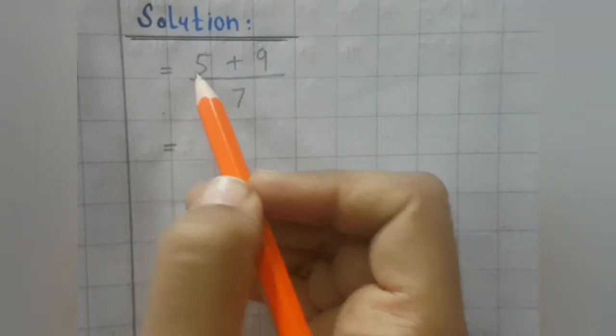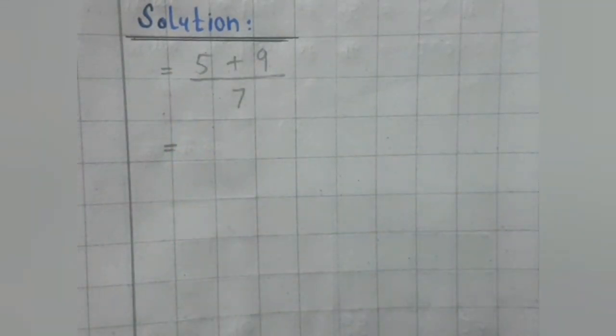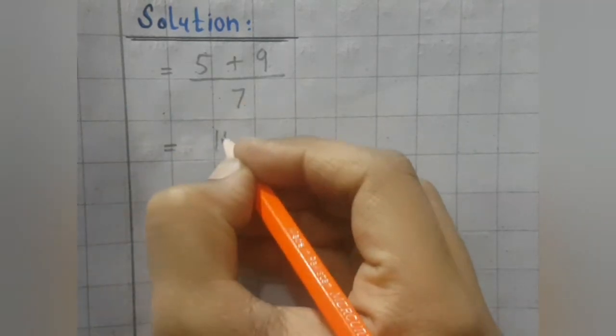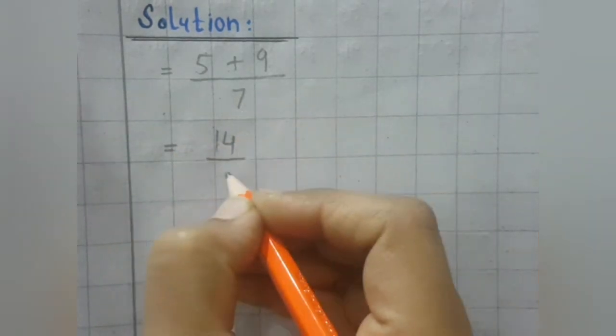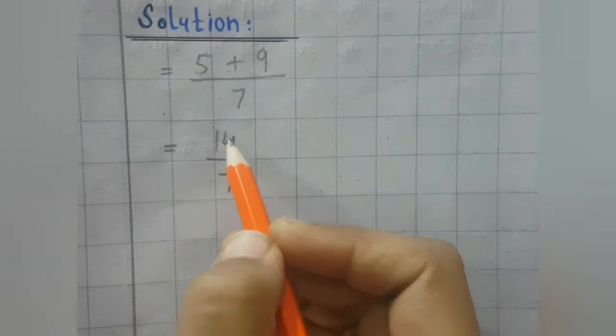Now add the numerators that is 5 plus 9. 9 plus 5 equals 14. And the denominator will remain 7. So we have 14 upon 7.